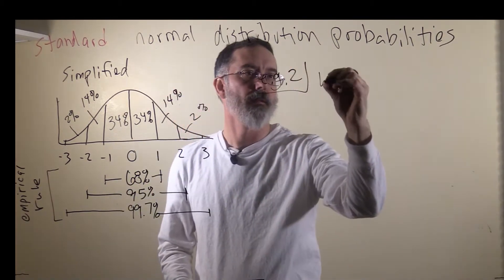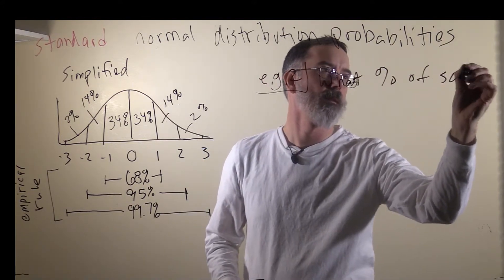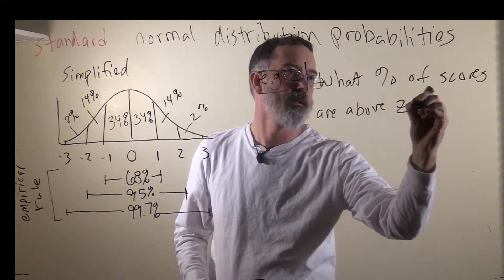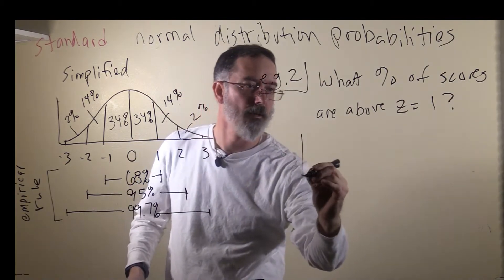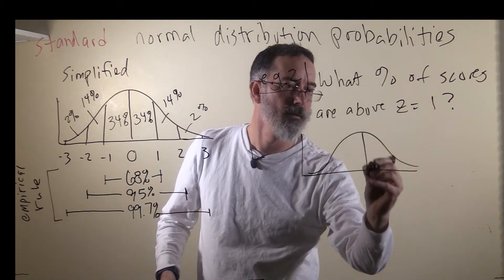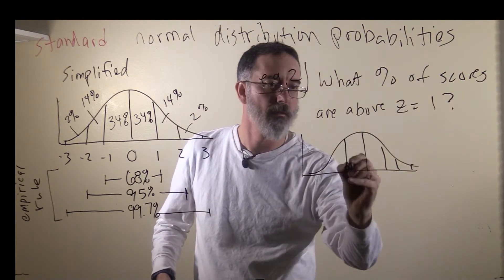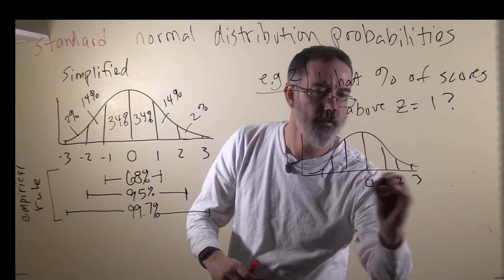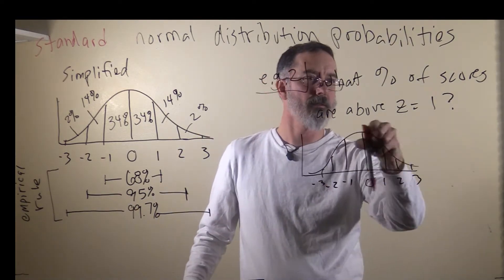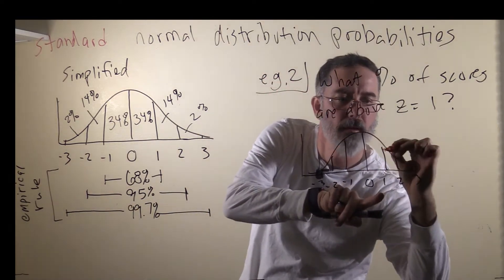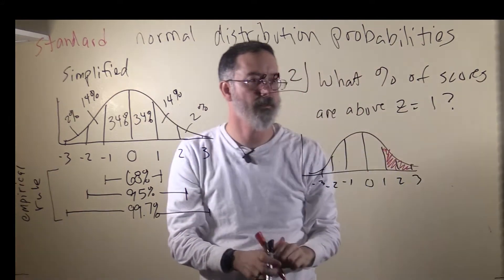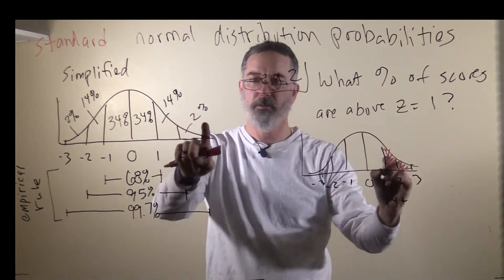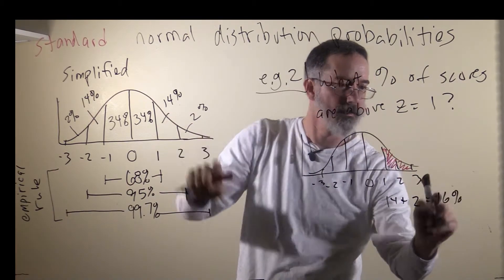Example two is: what percent of scores are above z equals 1? We can draw this out to locate where we are looking. We are interested in scores that are above z equals 1. Between 1 and 2 that is 14%, and between 2 and 3 that is 2%. So 16% of scores are above a z-score of 1.